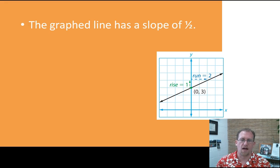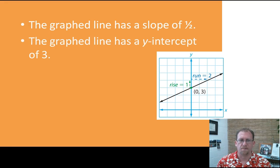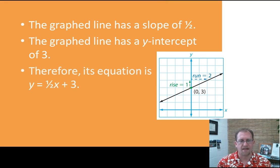The graphed line has a slope of 1/2, up 1 and over 2. The graphed line has a y-intercept of 3. So I can express this line in y = mx + b form. I can say that its equation is y = 1/2x + 3 because it's crossing the y-axis at 3. So you can use this information both directions.